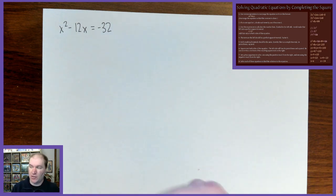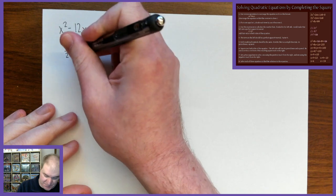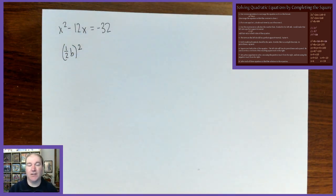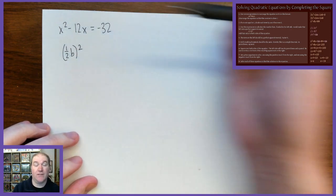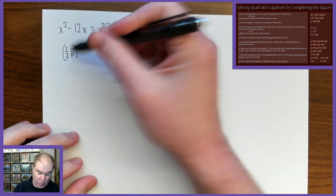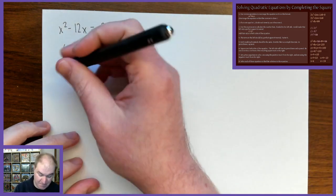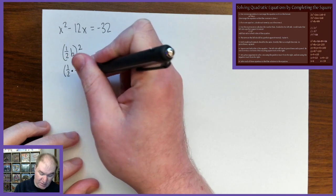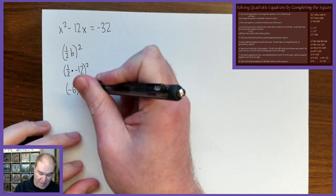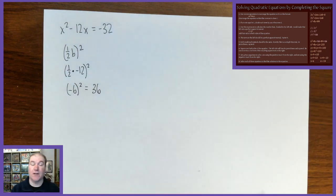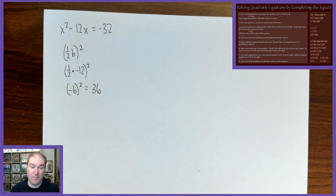Step three: use the expression (b/2)² to calculate the number that, if added to the left side, would make it a perfect square trinomial. B is the number in front of x. So we take negative 12, put it in for b, take half of negative 12 which is negative 6, and then square it — negative 6 squared is positive 36. Remember, anything negative squared becomes positive because it's a negative times a negative.